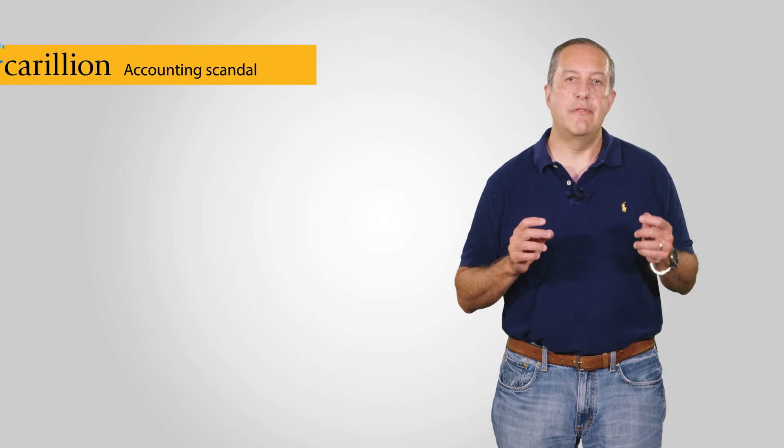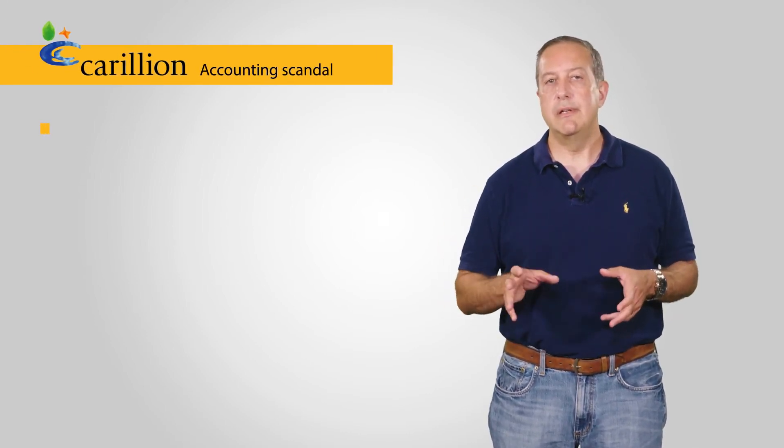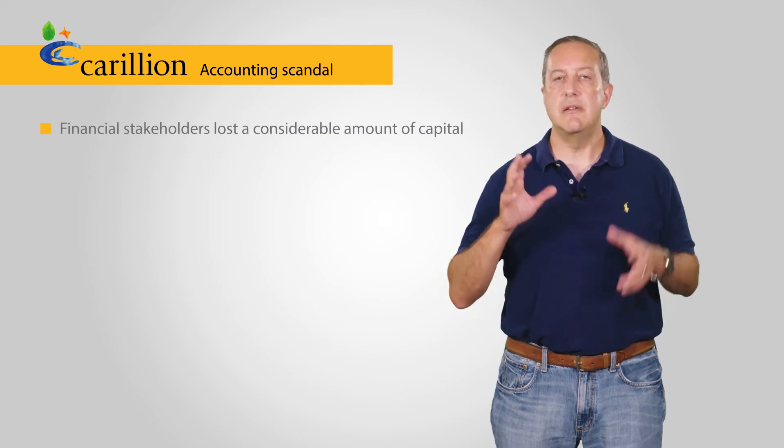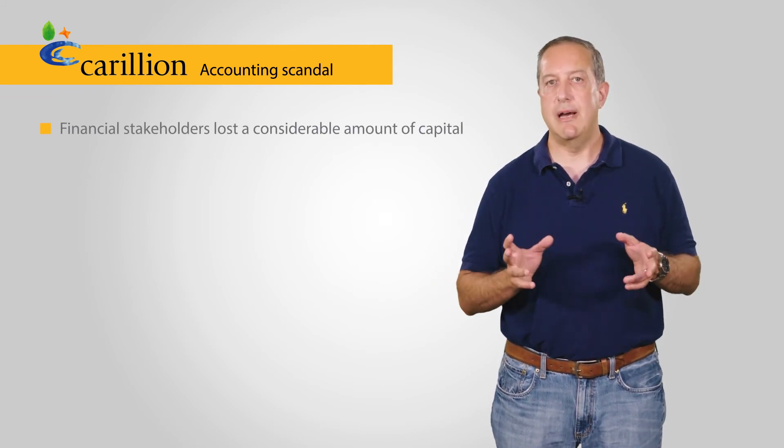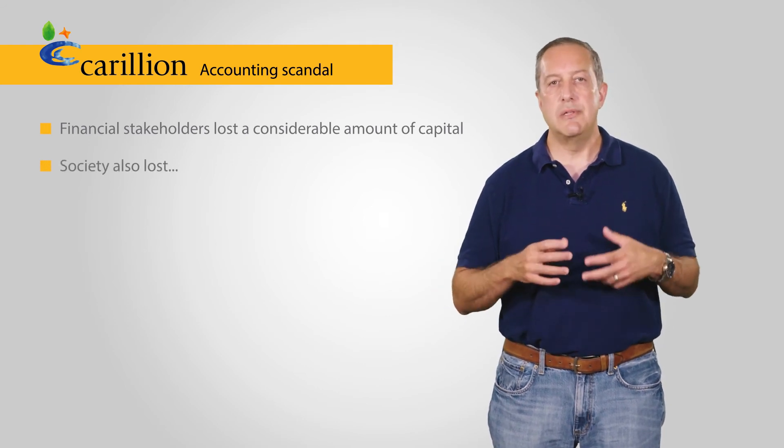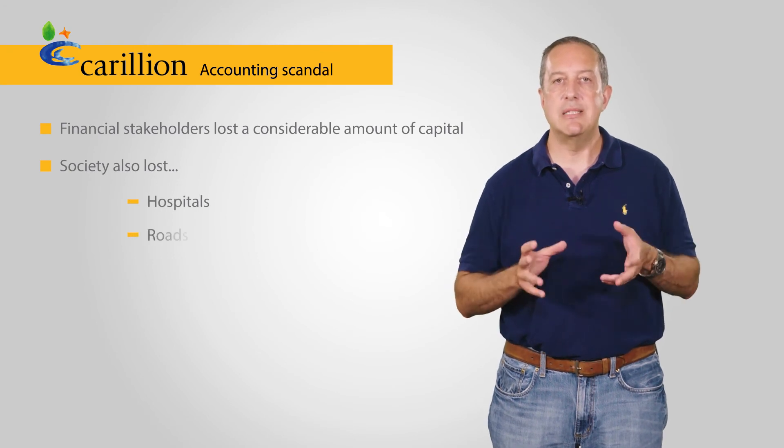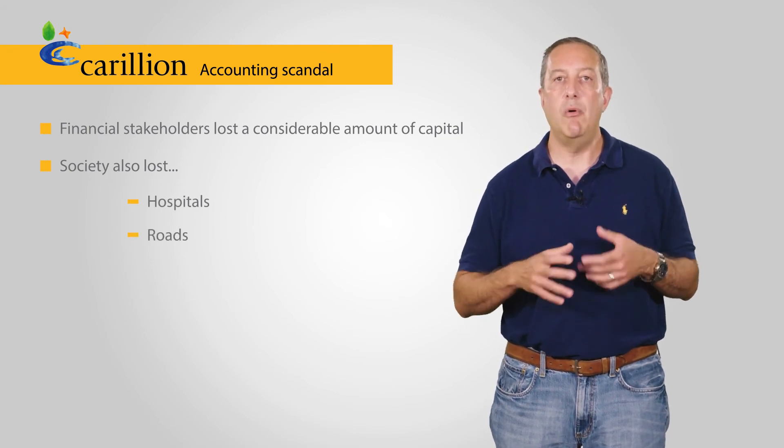This latter point can be further illustrated with the fallout from the Carillion accounting scandal which happened recently. Clearly, with Carillion, the financial stakeholders lost a considerable amount of capital in the wake of the collapse. However, society also lost as well. As a result of the Carillion scandal, for example, communities did not have their hospitals and roads built on time or on budget.